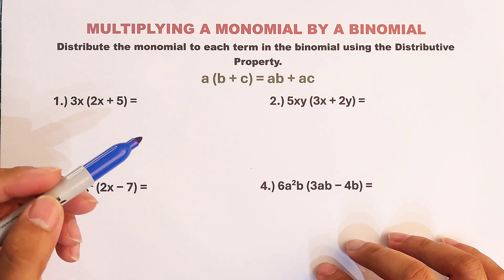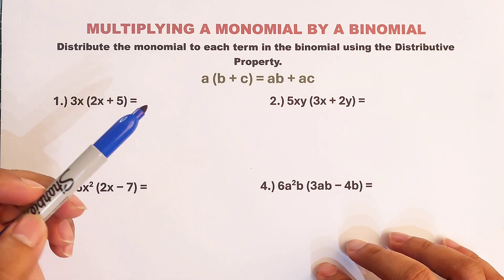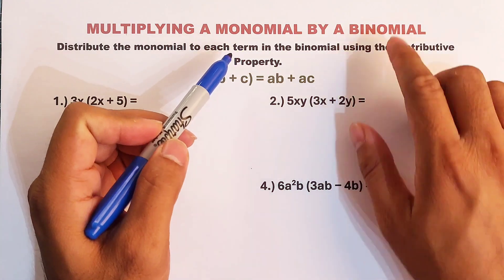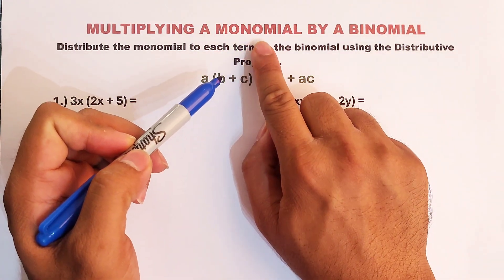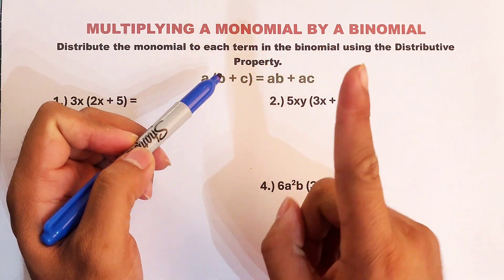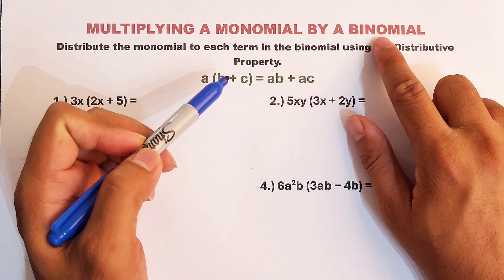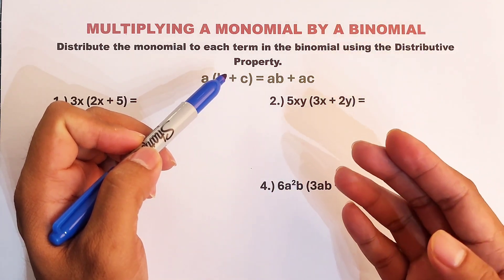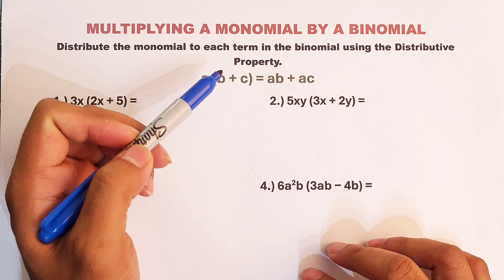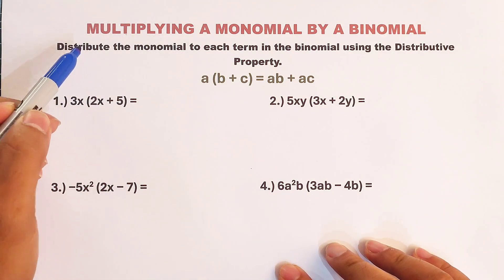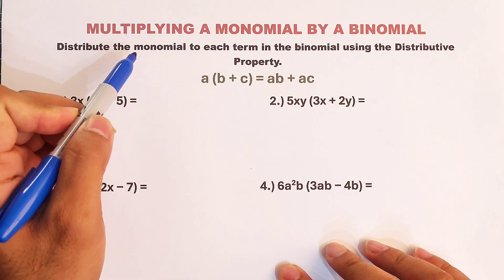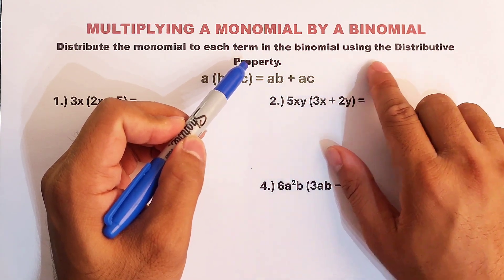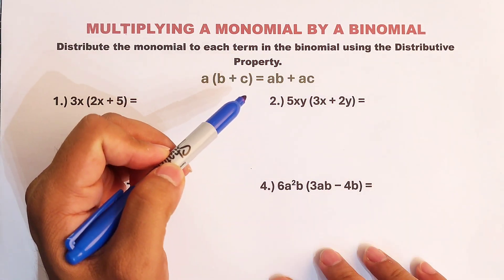So what we have here is this topic. Now, how are we going to multiply a monomial by a binomial? When we say monomial, it is an expression with a single term. When we say binomial, it is an expression that has two terms. Here's the step: we will distribute the monomial, or multiply the monomial, to each term in the binomial using the distributive property.